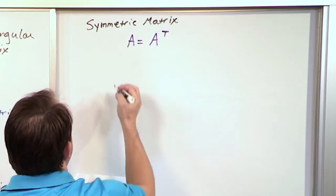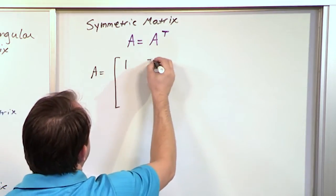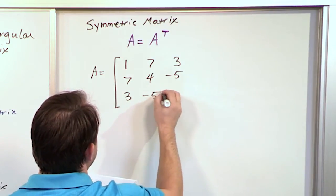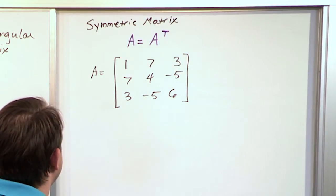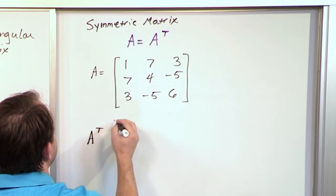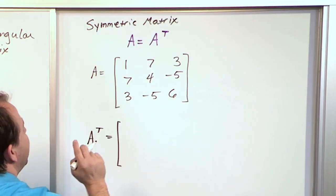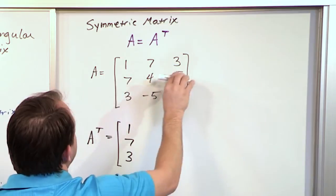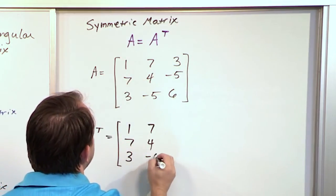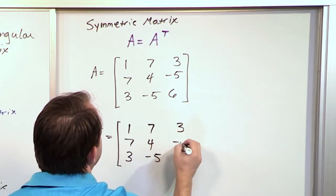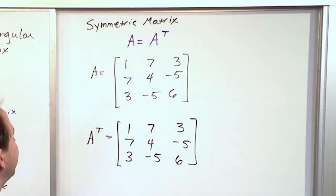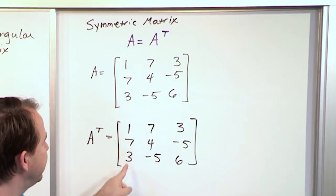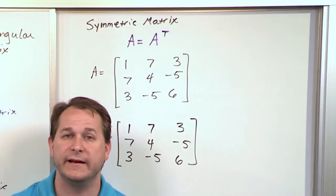Let's say we have matrix A: 1, 7, 3 / 7, 4, −5 / 3, −5, 6. To figure out if it's symmetric, first construct the transpose by turning rows into columns: row 1 → column 1 gives 1, 7, 3; row 2 → column 2 gives 7, 4, −5; row 3 → column 3 gives 3, −5, 6. This is the transpose of the original matrix. Notice: 1, 7, 3 / 7, 4, −5 / 3, −5, 6 — the transpose is exactly the same as the original matrix.